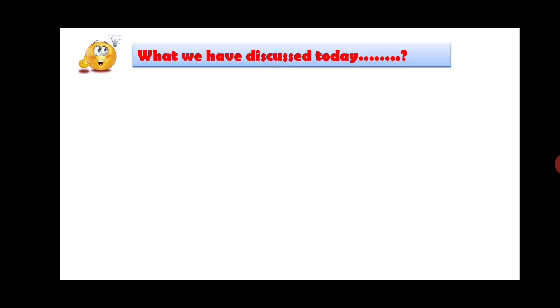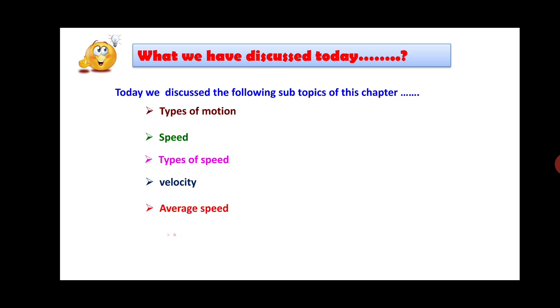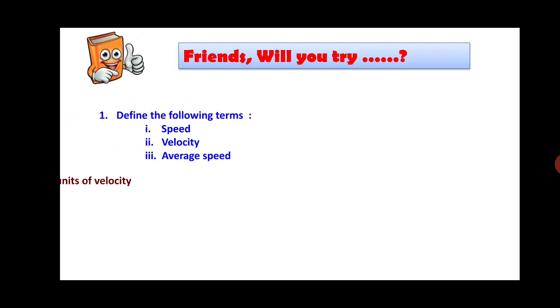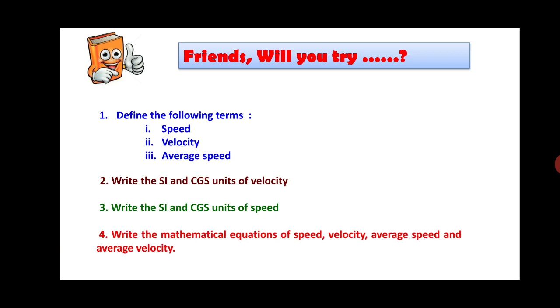What we have discussed today includes: types of motion, speed, types of speed, velocity, average speed, and average velocity. For practice, try the following problems: define the terms speed, velocity, and average speed; write the SI units of velocity and speed; and write the mathematical equations of speed, velocity, average speed, and average velocity. These questions are very easy and are given for practice purposes.